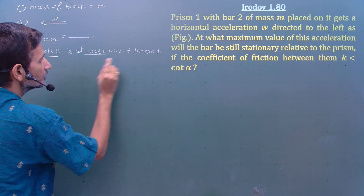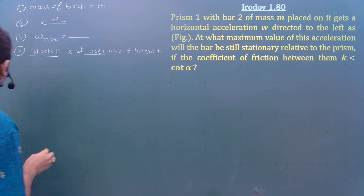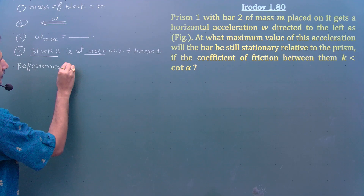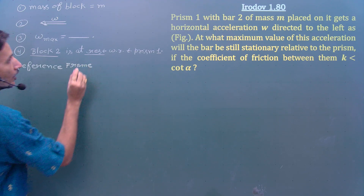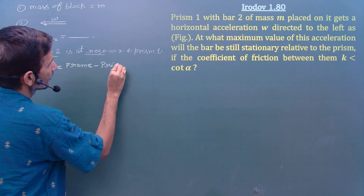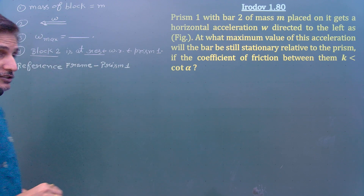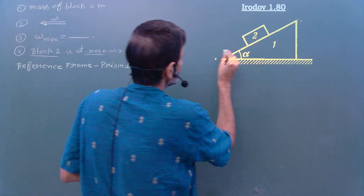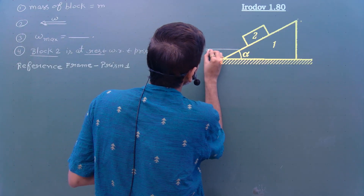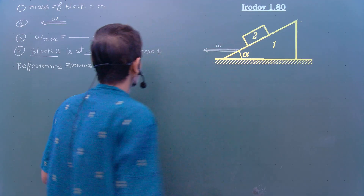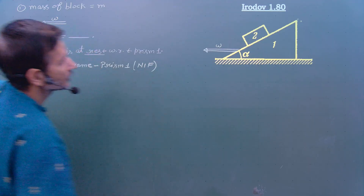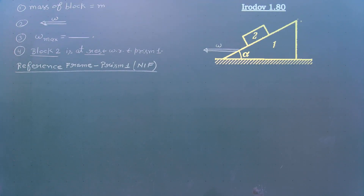Since block 2 is at rest with respect to prism 1, our reference frame should be prism 1. Note that this prism has acceleration w in the left direction, so prism 1 is a non-inertial reference frame. We have to draw all diagrams with respect to prism 1.